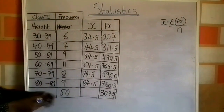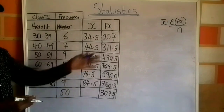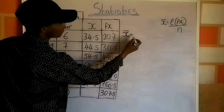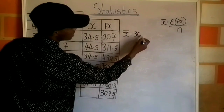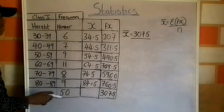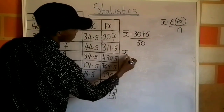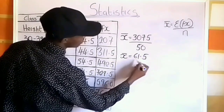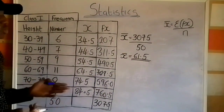I have gotten the summation of fx (which is 3075) and n (which is 50). So the arithmetic mean equals summation fx over n: 3075 divided by 50 = 61.5. The value of the mean for this data is 61.5.